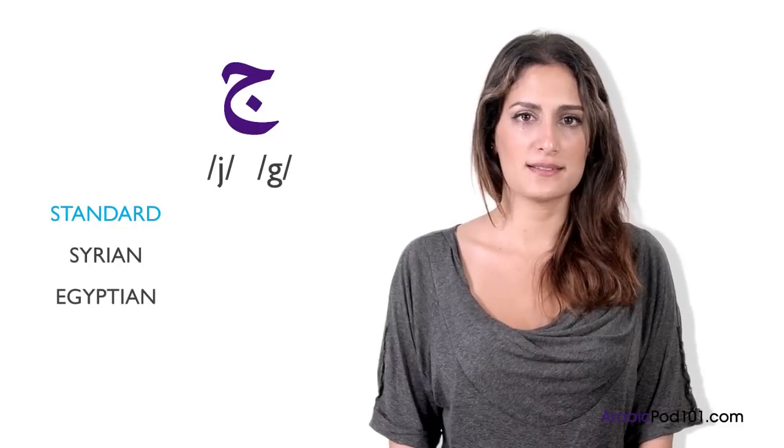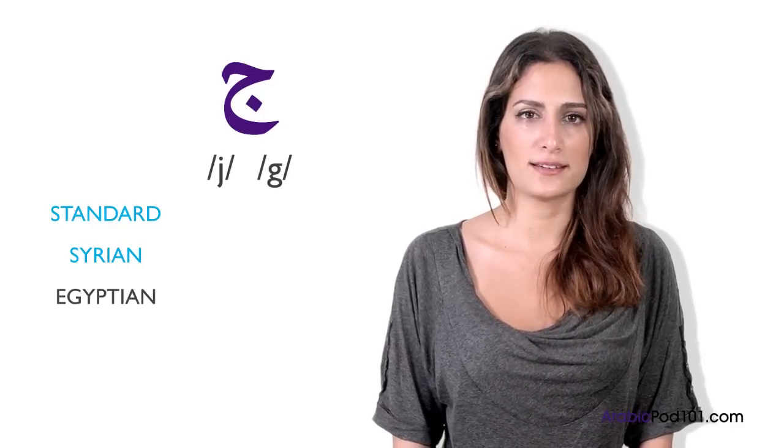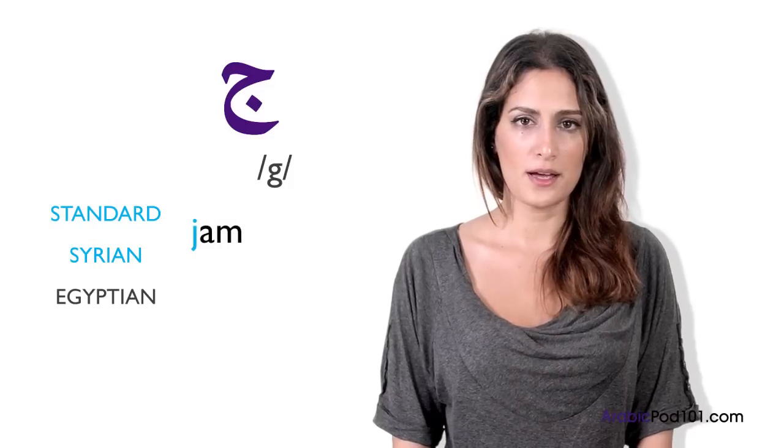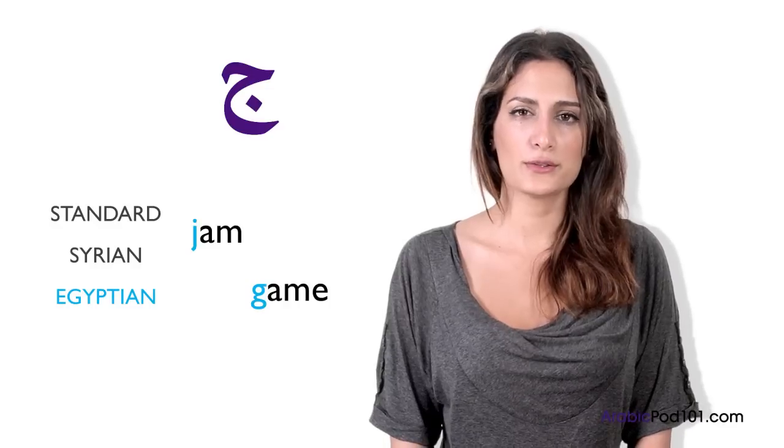In Standard Arabic and Syrian Arabic, it should sound like the J in the word jam, while in Egyptian Arabic, it sounds like the G in the word game. They're both quite easy to pronounce, though. Jīm.